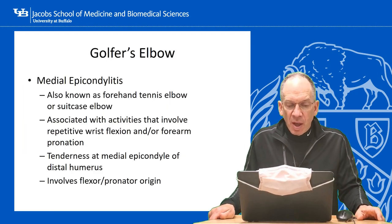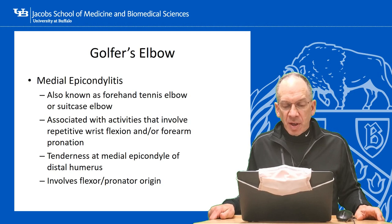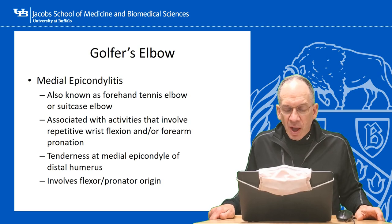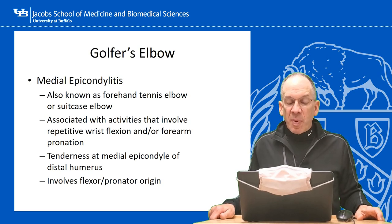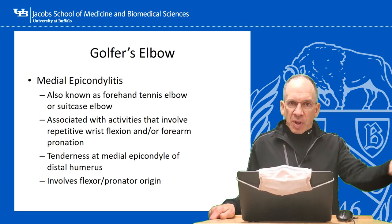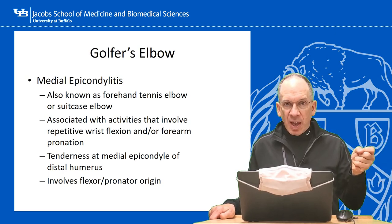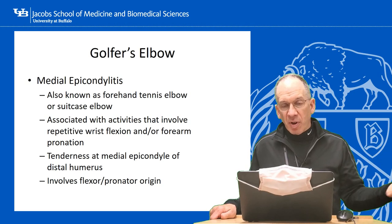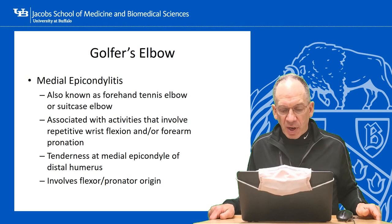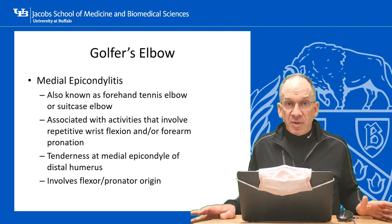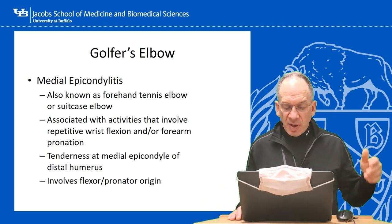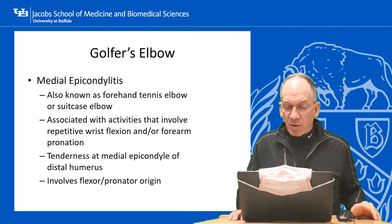Golfer's elbow is medial epicondylitis, also known as forehand tennis elbow or suitcase elbow. It's associated with activities involving repetitive wrist flexion and forearm pronation. That's important because if you go back to your anatomy, what originates at the medial epicondyle are the wrist flexors and the pronator teres — at least the humeral head. It's characterized on physical examination by tenderness at the medial epicondyle of the distal humerus, and involves the flexor-pronator origin.